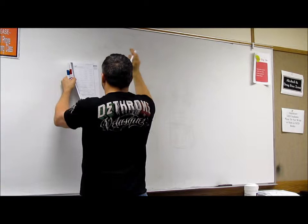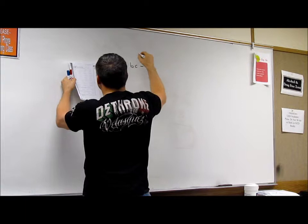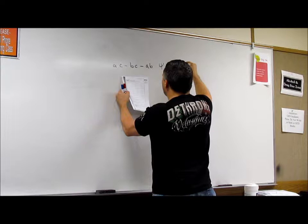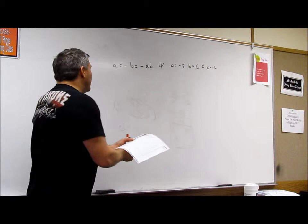And it's, well, I guess it's not too hard. But yeah, let's do it. A times C minus B times C minus A times B. Whereas, A is equal to negative 3. B is equal to 6. And C is equal to negative 2. Okay?